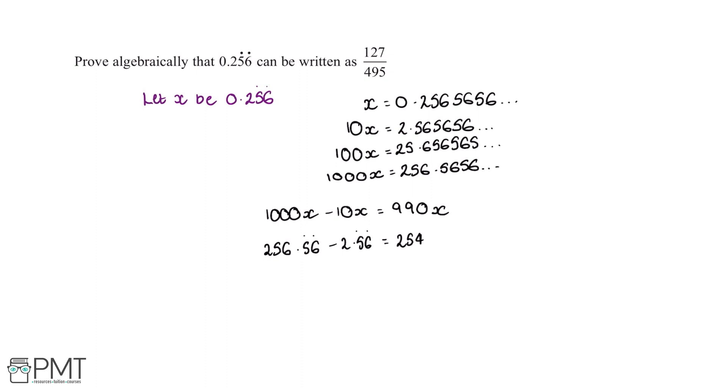So now if 1000x minus 10x is equal to 990x, and 1000x is equal to 256.56 reoccurring, and 10x is equal to 2.56 reoccurring, then this means that 990x is equal to 254.